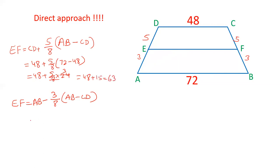And you can also find this by subtracting 3 by 8 part from AB. AB is 72, 3 by 8 of AB minus CD, that is 72 minus 48. So 72 minus 3 by 8 into 72 minus 48 is 24. 8 threes are 24, 9. Subtract 72 minus 9, and you will get 63.